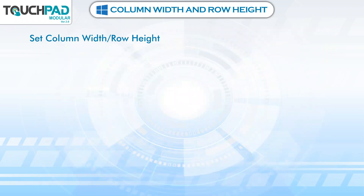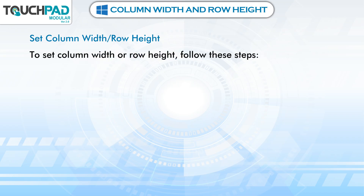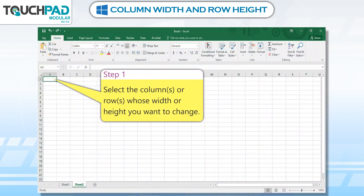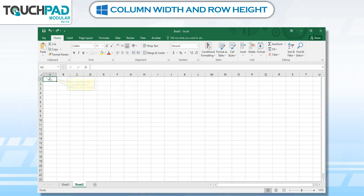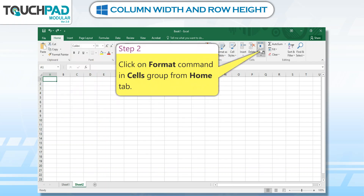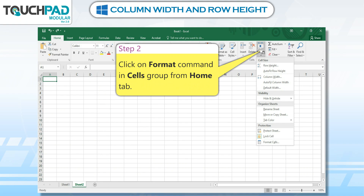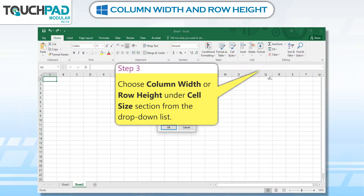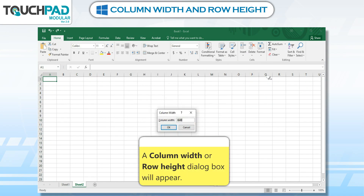Set Column Width / Row Height. To set column width or row height, follow these steps. Step 1: Select the column or row whose width or height you want to change. Step 2: Click on the Format command in the Cells group from the Home tab. Step 3: Choose Column Width or Row Height under the Cell Size section from the drop-down list. A Column Width or Row Height dialog box will appear.